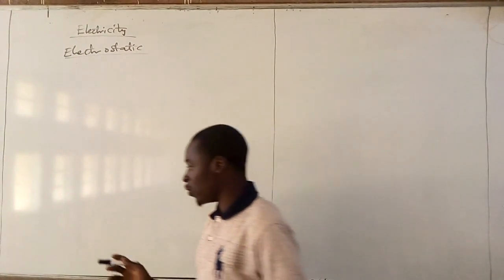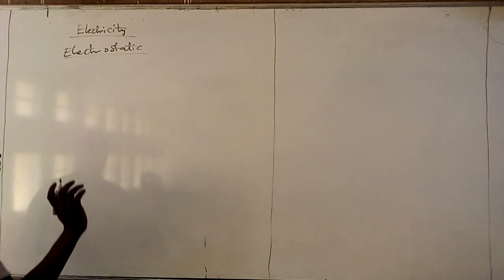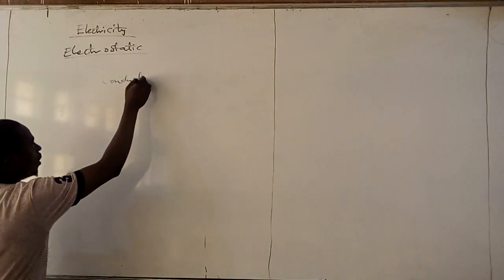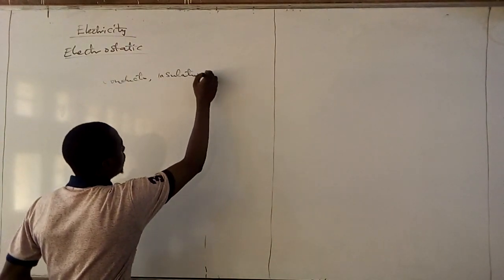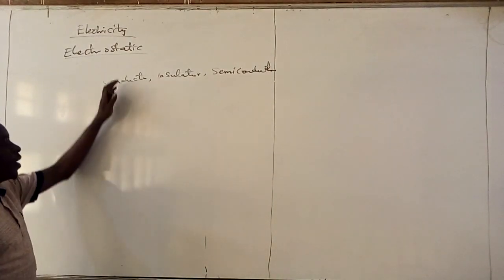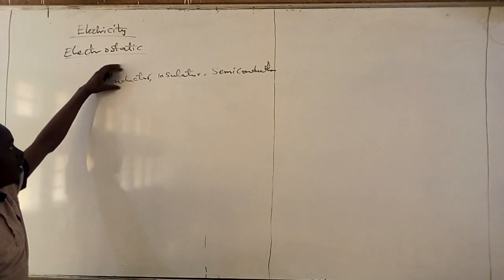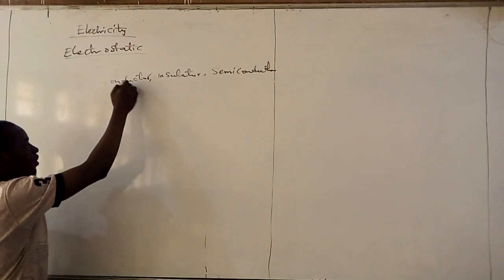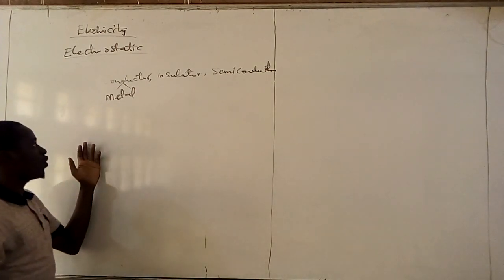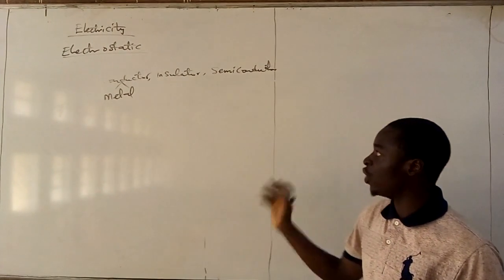For us to have electricity, there are some properties we must understand. The first property is that we have what we call a conductor, an insulator, and a semiconductor. For the production of electricity, there must be a conductor. We all know what a conductor is — a conductor is a material that allows electricity to pass through it. The perfect example is metal. Human bodies are also an example of a conductor.